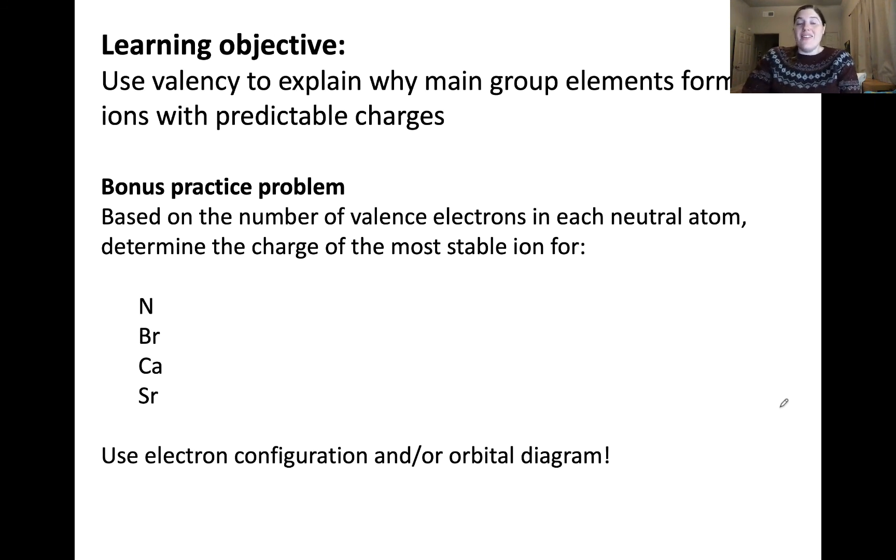The objective of this video was to use valency to explain why the main group elements form ions with predictable charges. Here's another set of bonus practice problems for you to do. So determine the number or the charge of the most stable ion of these different elements using the concepts we talked about in this video. I highly recommend drawing orbital diagrams and writing out electron configurations for the atoms and ions as a support to your reasoning. Thanks for watching, and I'll see you in the next video.